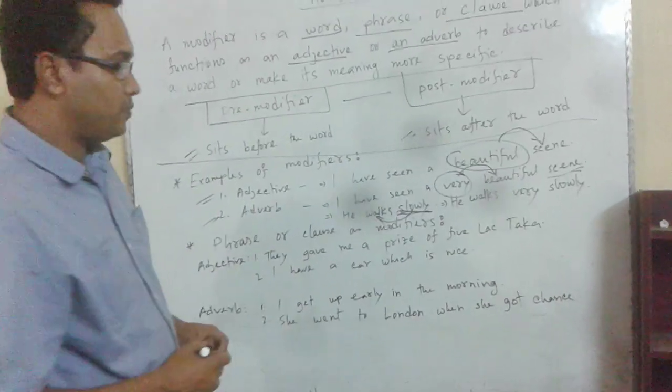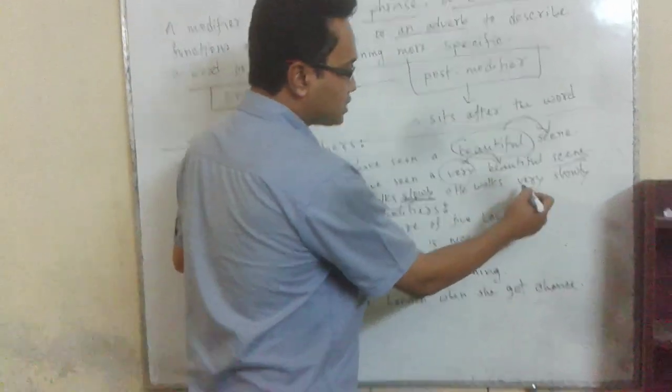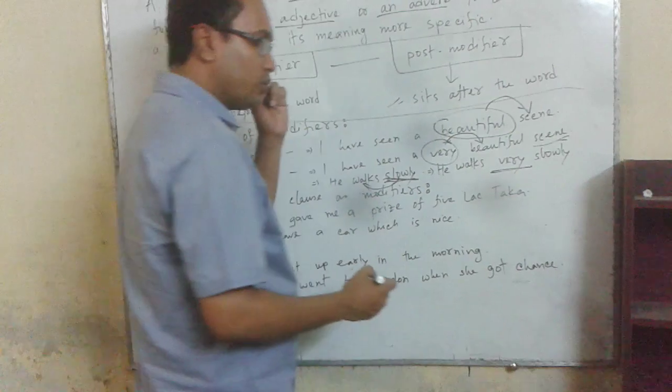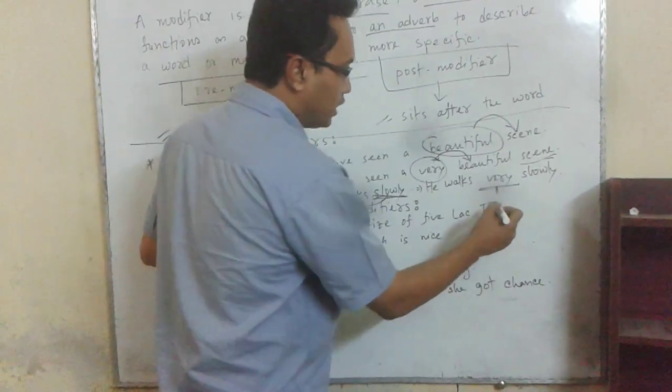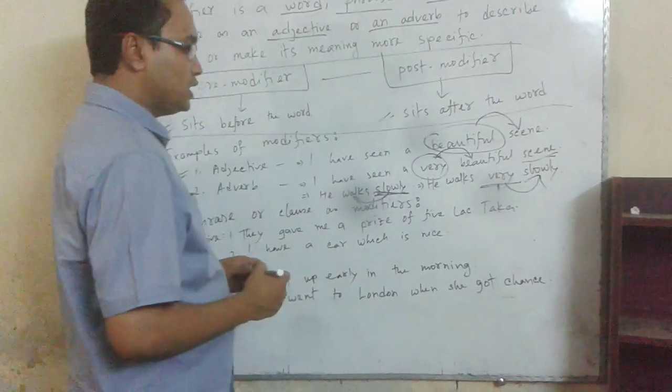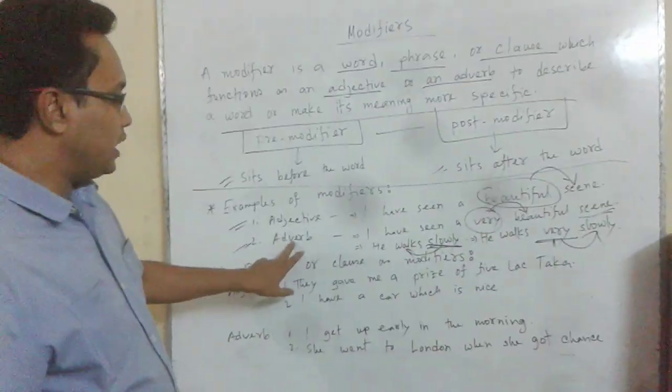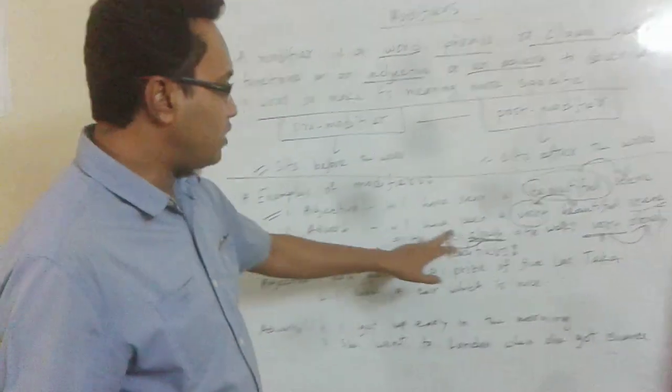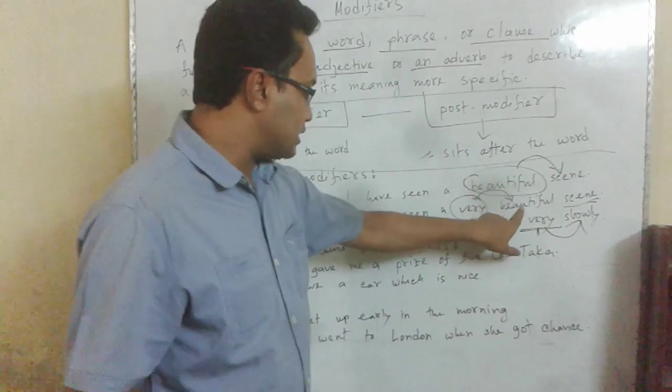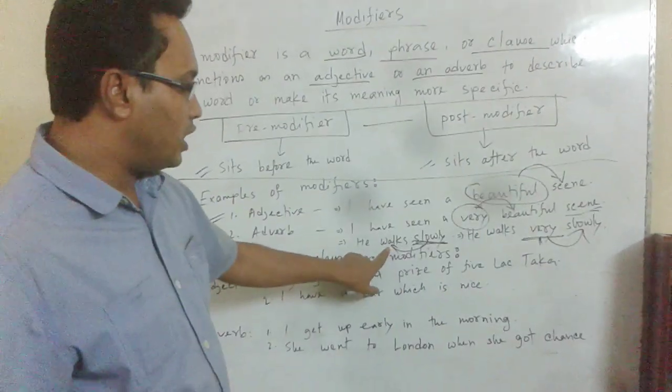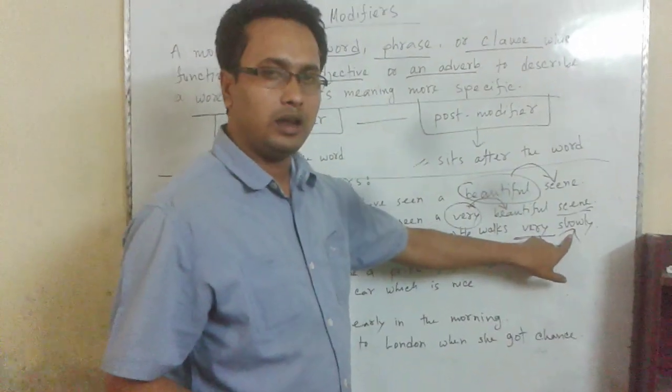He works very slowly. Very is also an adverb modifying the word slowly. So an adverb modifies an adjective, a verb, and an adverb.